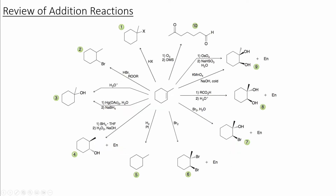In this chapter, we have learned a variety of different reactions that can occur using an alkene as the starting material. In summary, the different addition reactions that we have learned will add one functional group to either side of the double bond.